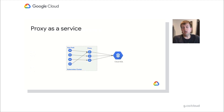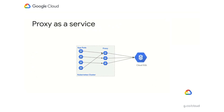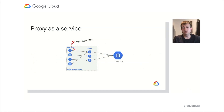When you're running the proxy as a service, typically you do it as a separate deployment from your application. You can see on the left we have our application pods being deployed, and on the right we have our proxy pods being deployed. Your application connects directly to the proxy, and then the proxy routes your connection to Cloud SQL. One of the downsides is the traffic between your application and the proxy is not encrypted by default — the proxy doesn't offer encryption on the client side; it only encrypts traffic before it gets connected to Cloud SQL.